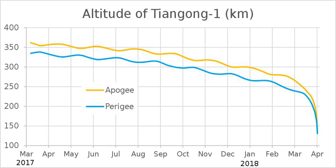While not a direct cause of orbital decay, uneven mass distributions of the body being orbited can perturb orbits over time, and extreme distributions can cause orbits to be highly unstable. The resulting unstable orbit can mutate into an orbit where one of the direct causes of orbital decay can take place.